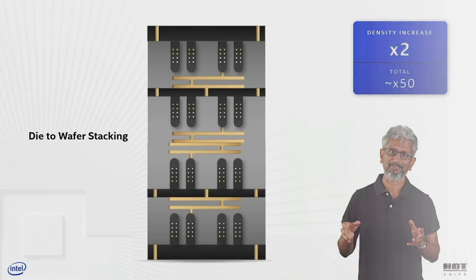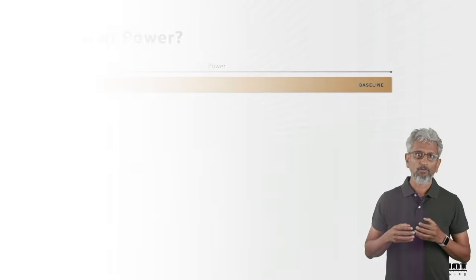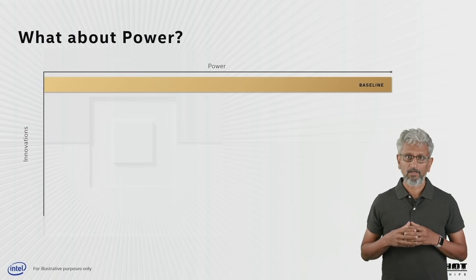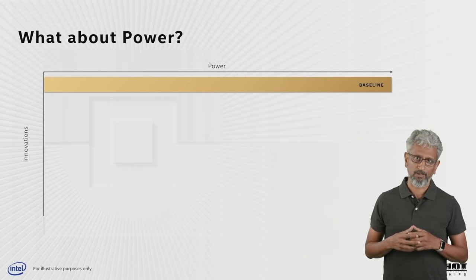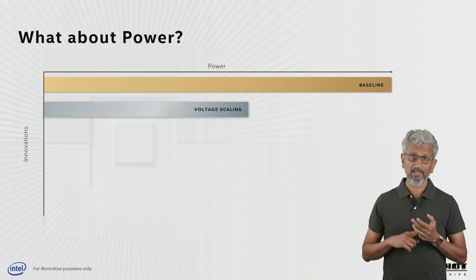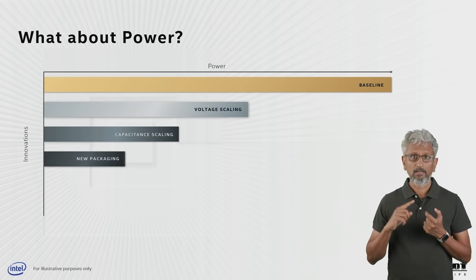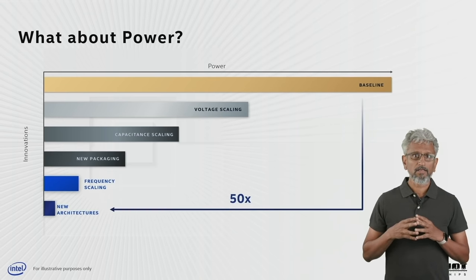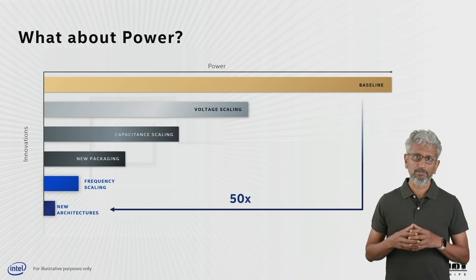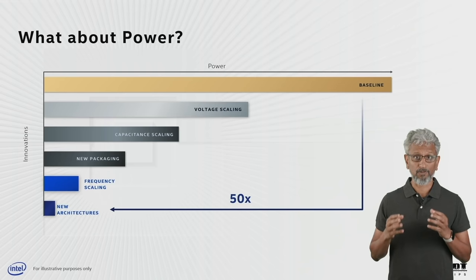I know what you're thinking — of course we can achieve density scaling, but what about power? Heat dissipation is a significant challenge. However, there is plenty of opportunity left in the toolbox: voltage scaling, capacitance scaling, wire length reduction with stacking, new packaging materials, frequency scaling, and new architectures. It will take a while for these technologies to cumulatively deliver the 50x reduction we need, but it will happen. We, as an industry, are very good at compounding incremental gains 1% at a time.